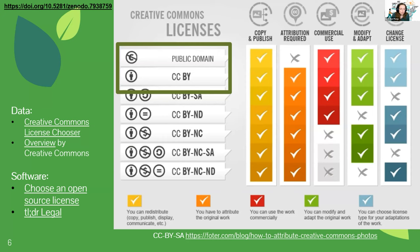You can explore licenses through the overview provided by Creative Commons, which is widely used for data, and they also provide a license chooser to help you find the right license more quickly. For software, licenses are also a bit complicated but equally important — without a license, people cannot actually reuse your work. I hope you can take the time to read through the licenses to decide which one matches your preferences.